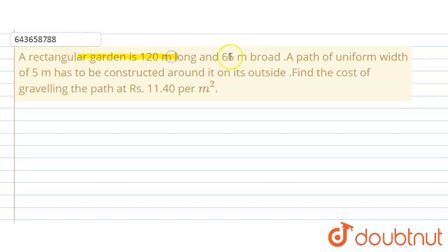A rectangular garden is 120 meters long and 65 meters broad. A path of uniform width 5 meters has to be constructed around it on its outside. Find the cost of graveling the path at rupees 11.40 per meter square.